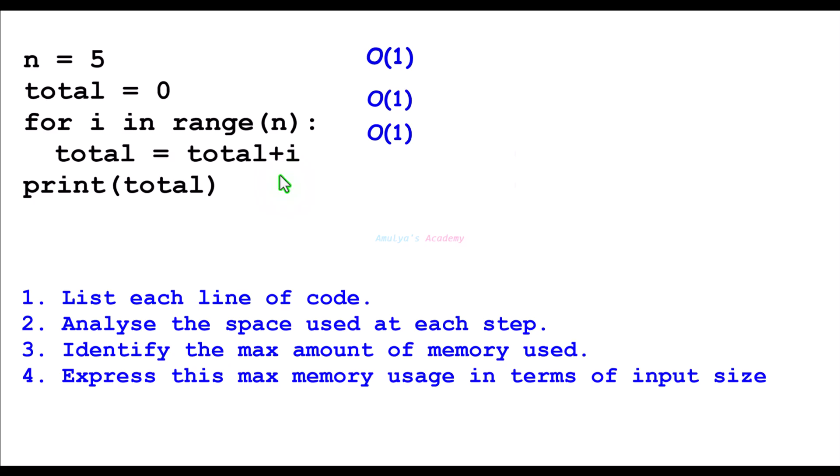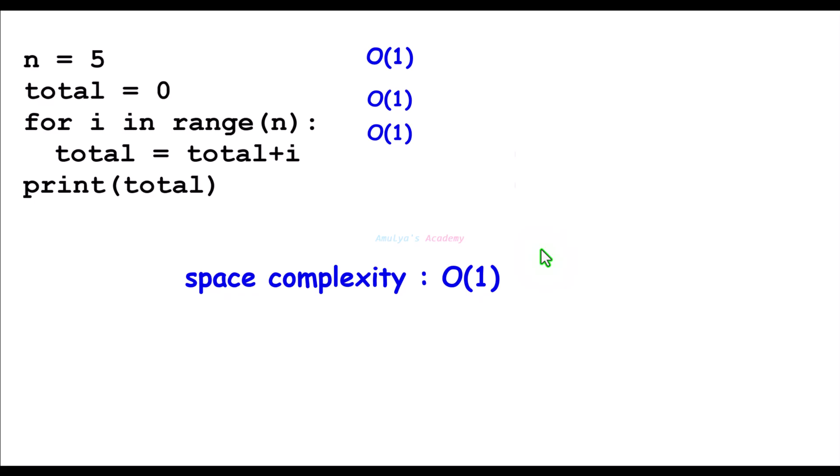No new variables or data structures are created here. Then we are printing this total variable, the value of the total variable. It won't affect computer memory. Next, we need to take the maximum memory usage. Here, Big O of 1, that is constant space. So here, the space complexity of this program is Big O of 1.